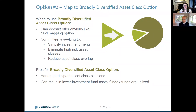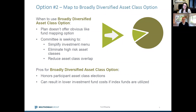We see option two most often when simplifying a menu or removing an asset class. You do this when the plan doesn't offer an obvious replacement mapping option and the committee is seeking to simplify the investment menu — perhaps eliminating a high-risk asset class or reducing asset class overlap. For example, if you have an inflation-adjusted bond product in the menu and decide you no longer want that asset class, you map all those assets and elections to a total bond index. The pros include continuing to honor participant elections and potentially lower investment costs through broadly diversified index funds.